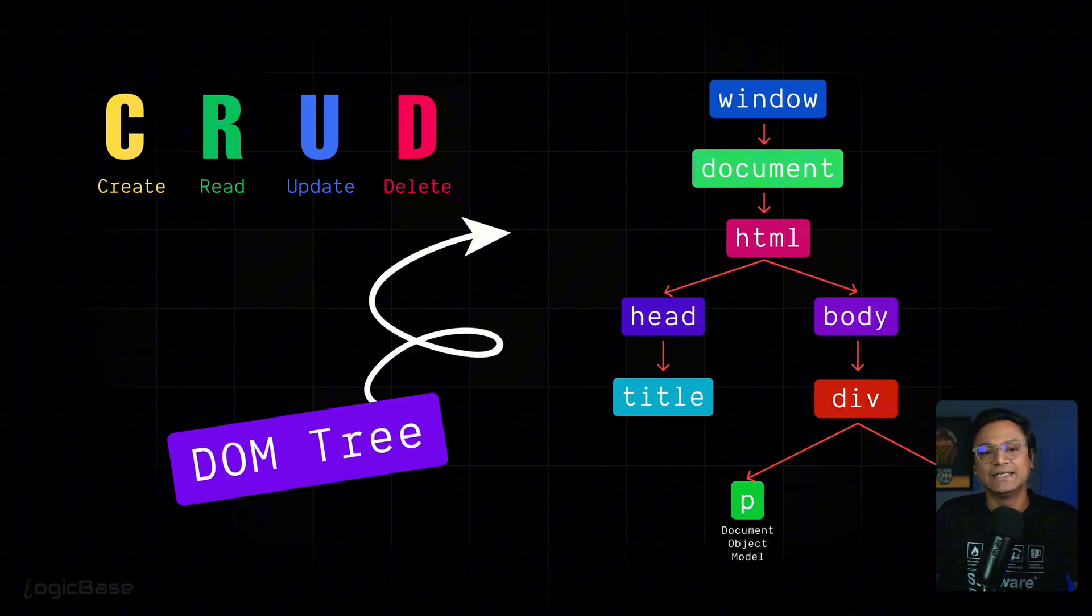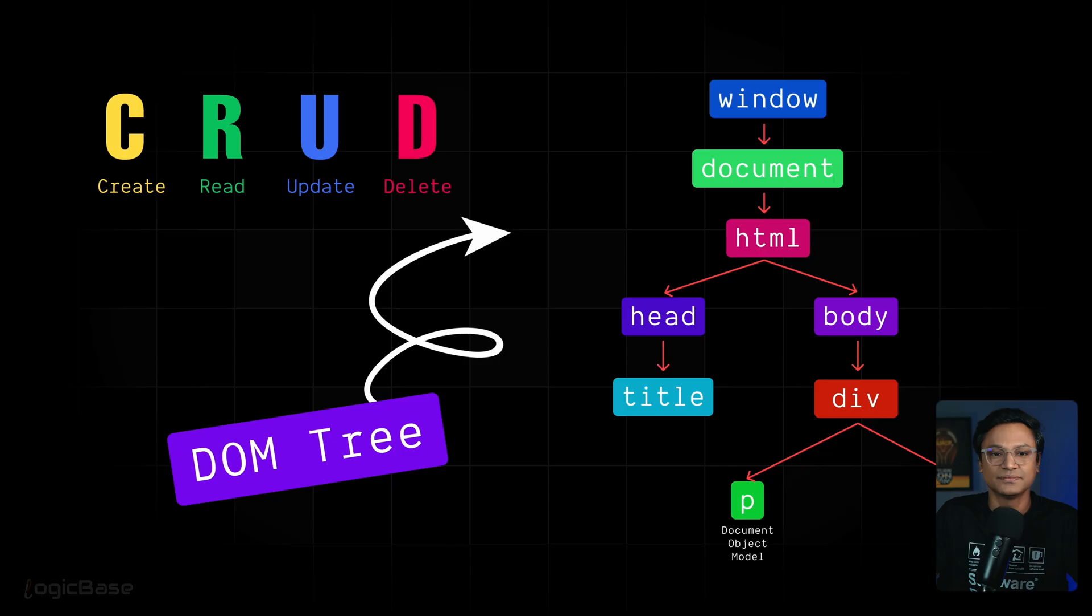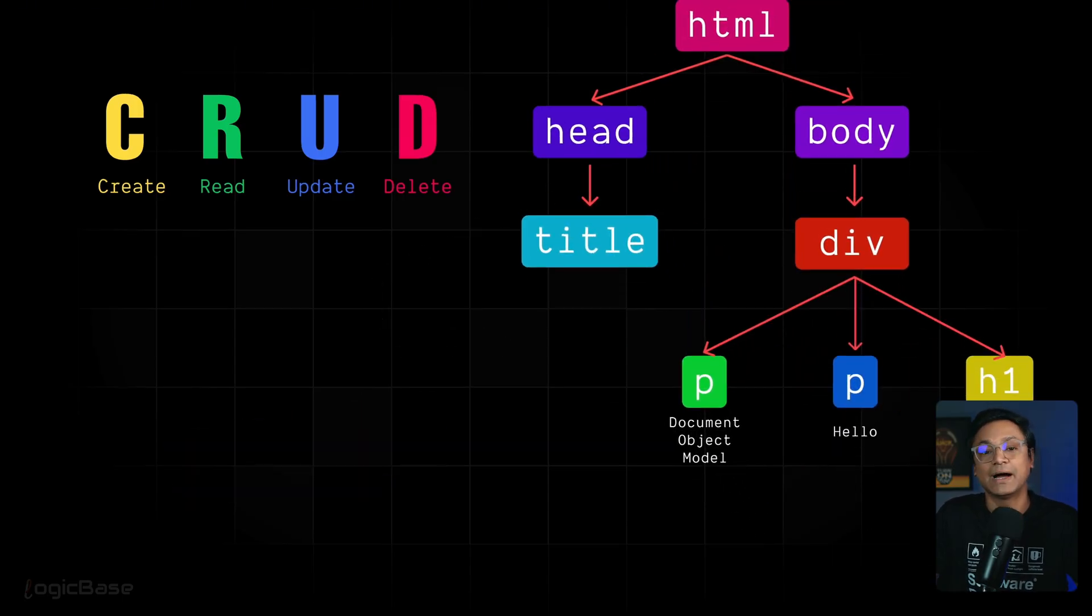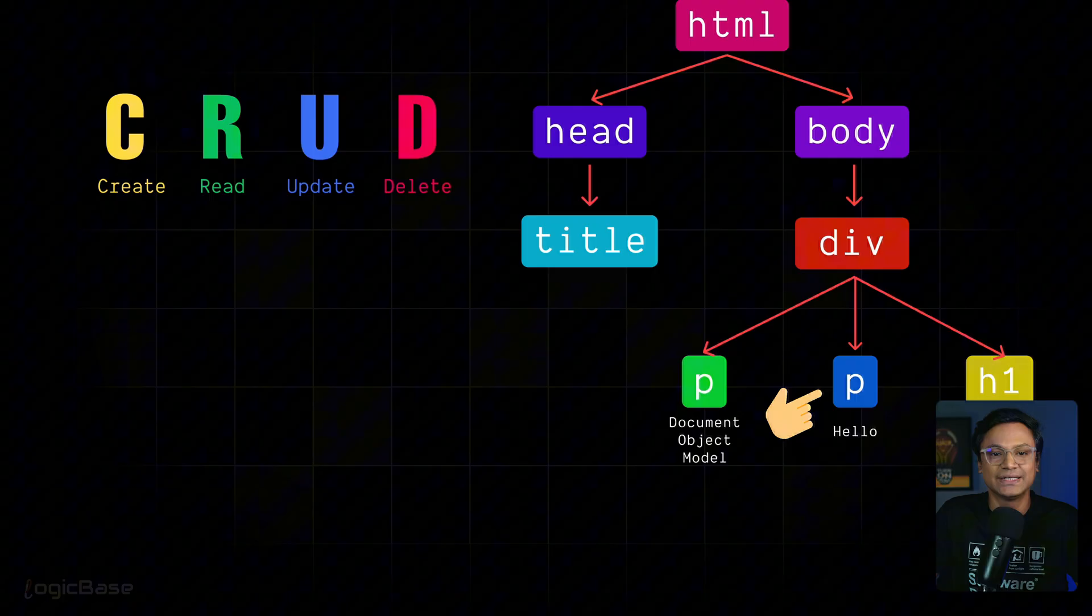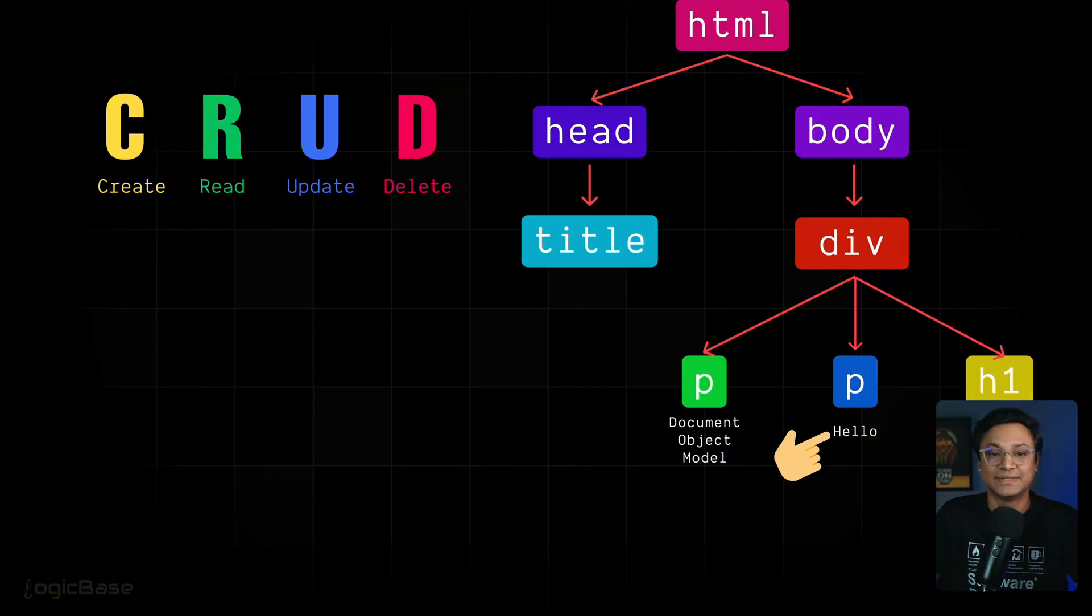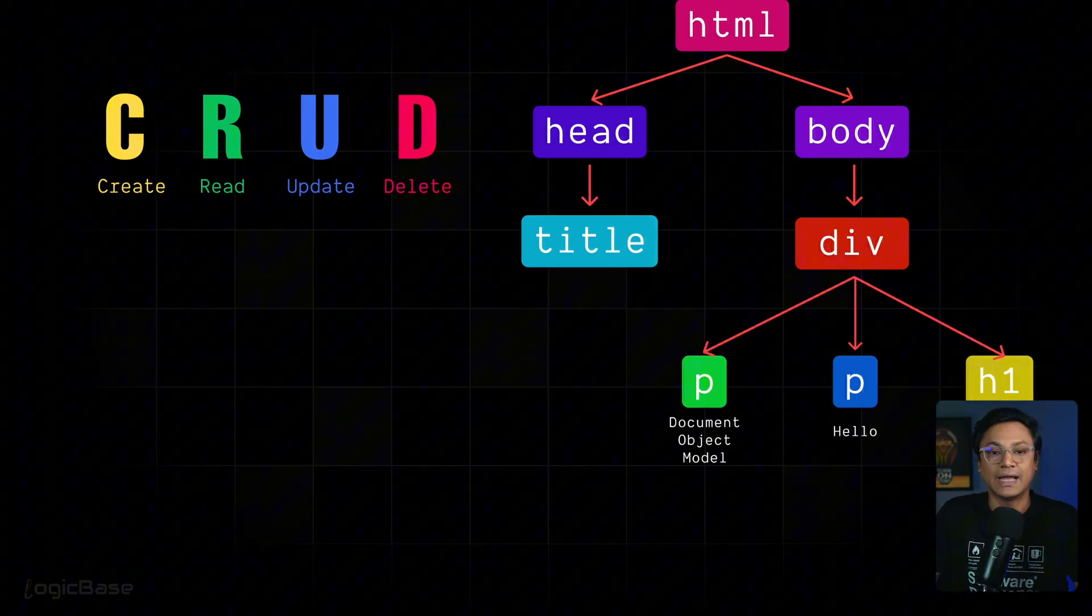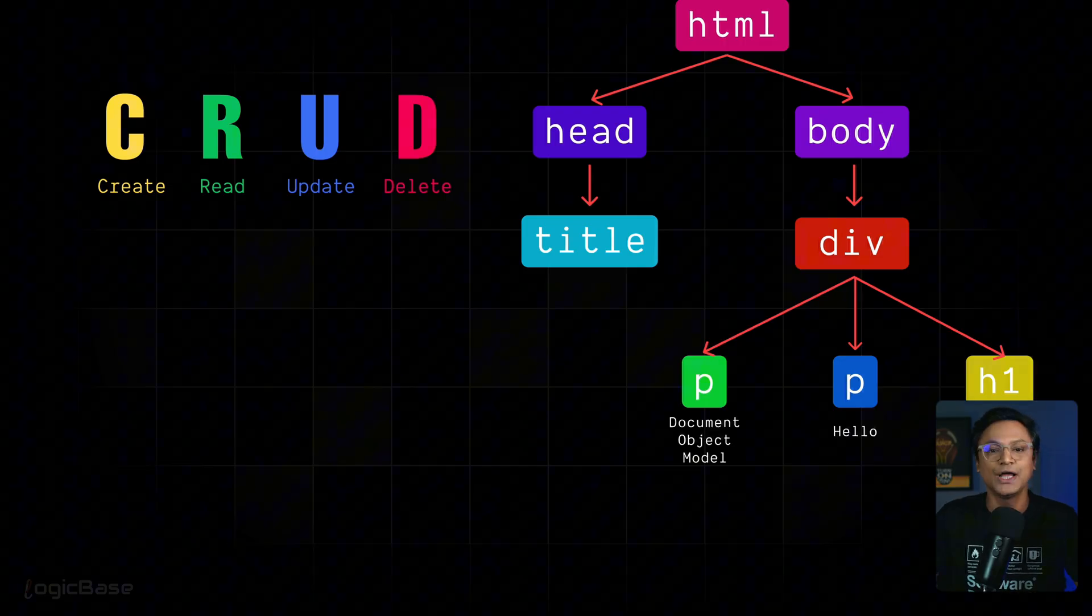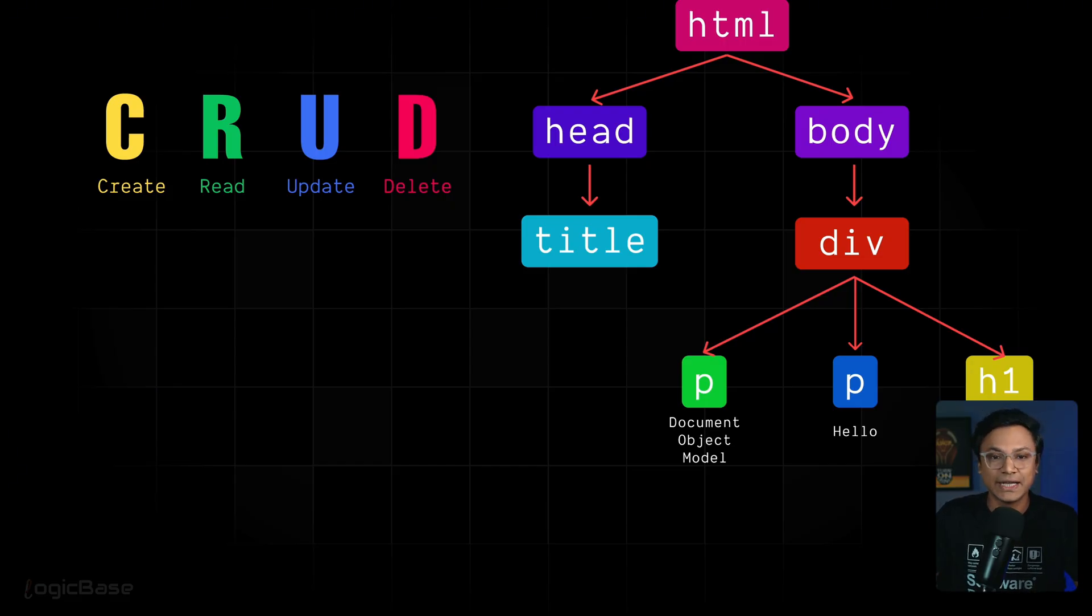We know that the C in CRUD stands for create. Inside the DOM, we can create a new element. For example, we could make a p tag element and put the text hello inside it. That's what we call a create operation. And we can also perform read, the R in CRUD. For example, we can read the text inside an h1 element if we want.